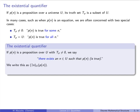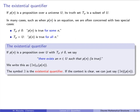We write the existential quantifier as follows. This backwards capital E symbol, you can read as 'there exists.' So this says: there exists an N — with a subscript U to indicate what universe we're in — such that P of N, or P of N is true. This backwards E is called the existential quantifier, again for 'there exists.' If the context is clear, we don't need the subscript U, so we often just write: there exists an N such that P of N.